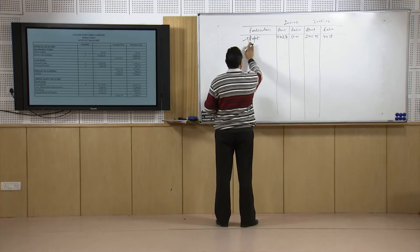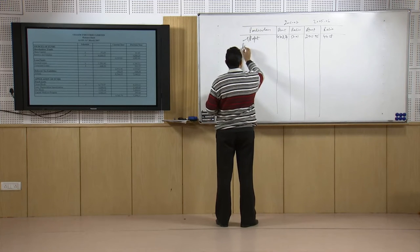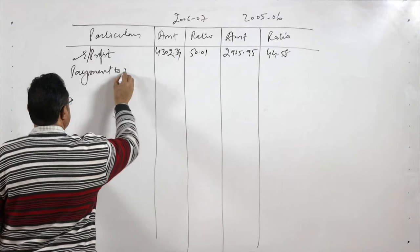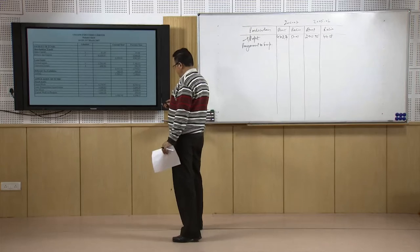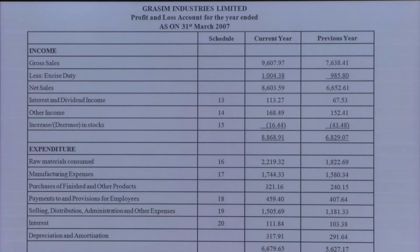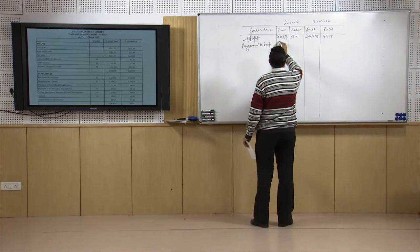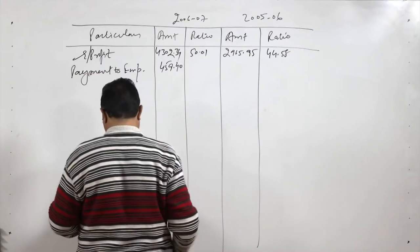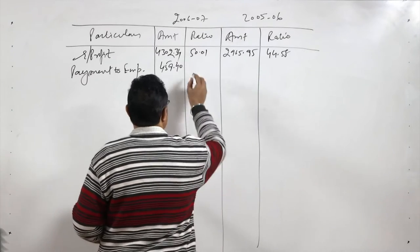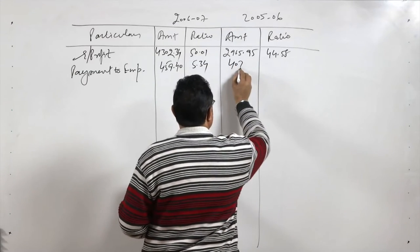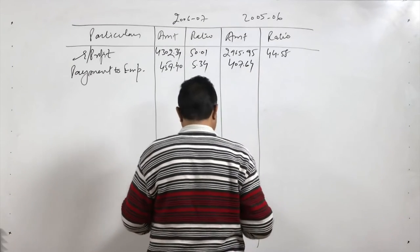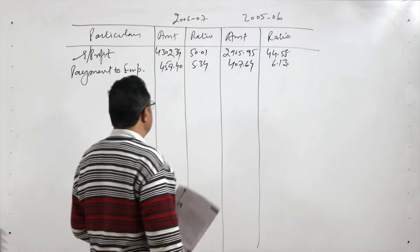Now we subtract the other expenses. First is payment made to employees — from schedule 18, it is 459.40 crores, which is 5.34 percent of net sales for the current year. In the previous year it was 407.64 crores, which was 6.13 percent of net sales.